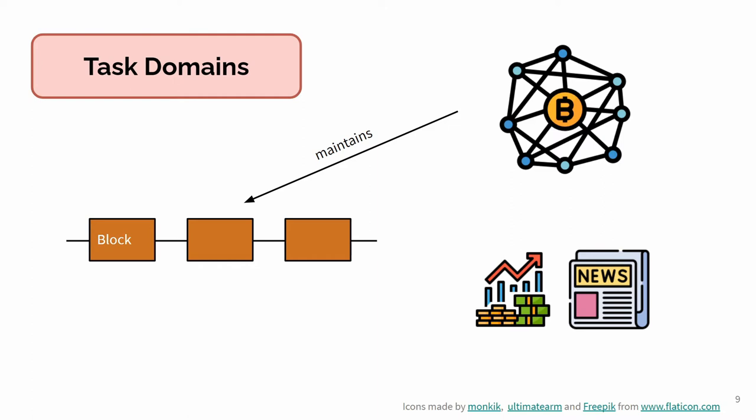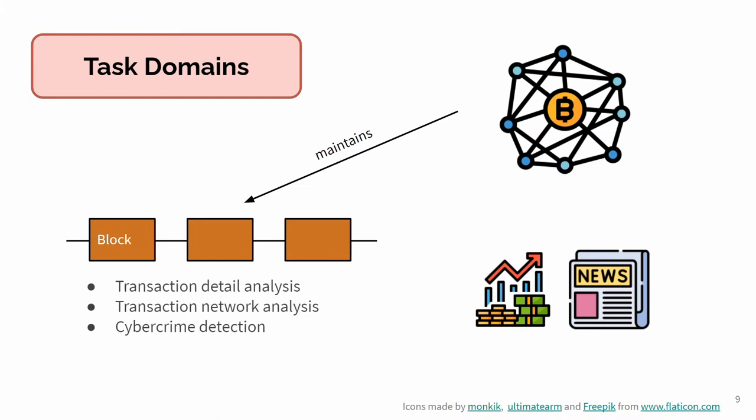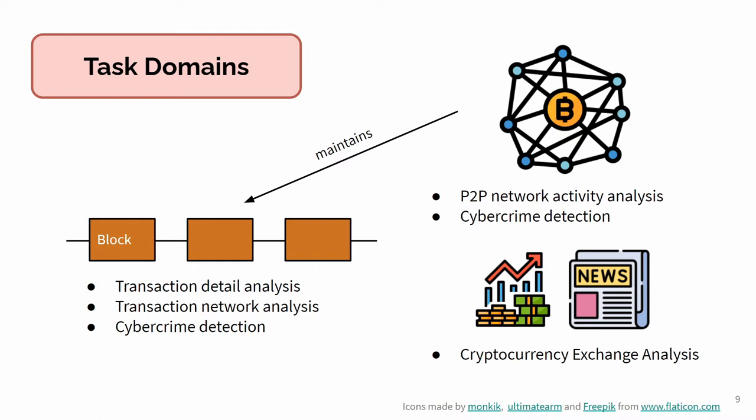Based on the blockchain data, we separate blockchain visualization sources into five task domains. The first three tasks — transaction detail analysis, transaction network analysis, and cybercrime detection — focus on the presentation of data stored in the blockchain. The peer-to-peer network analysis task domain gives an overview of activity in the blockchain network, including attacks such as denial of service or block-withholding attacks. Cryptocurrency exchange analysis uses external market data but is not the main focus of our survey.